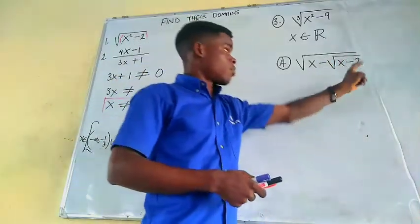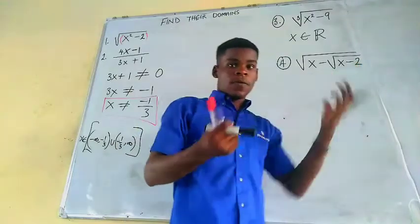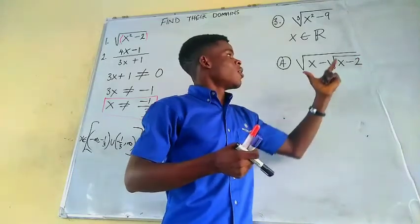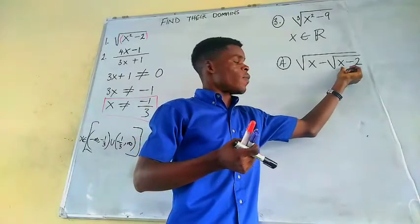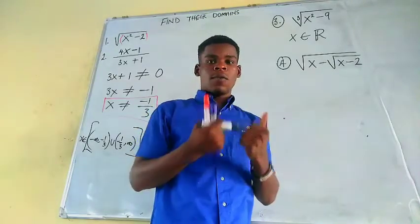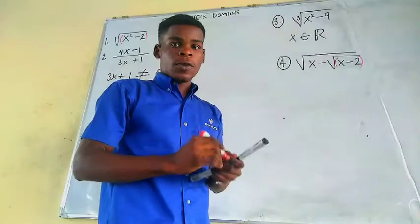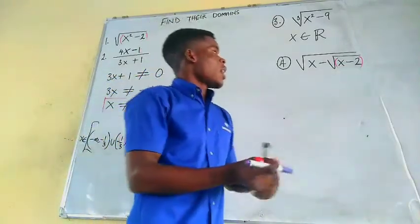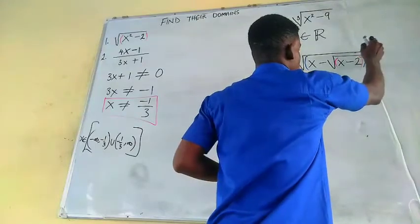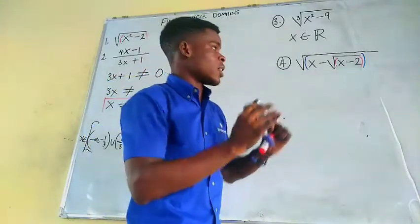We have to find the domain of f(x) = √(x − √(x−2)). We start with the inner square root. For the inner square root to be defined for any value of x, the radicand must be greater than or equal to zero. Similarly, for the bigger outer square root, its radicand — which includes the smaller one — must also be greater than or equal to zero.